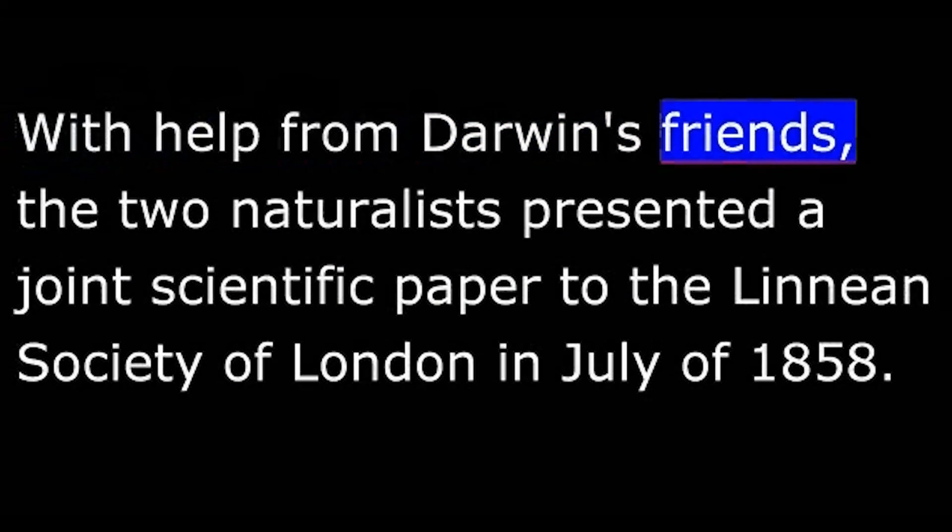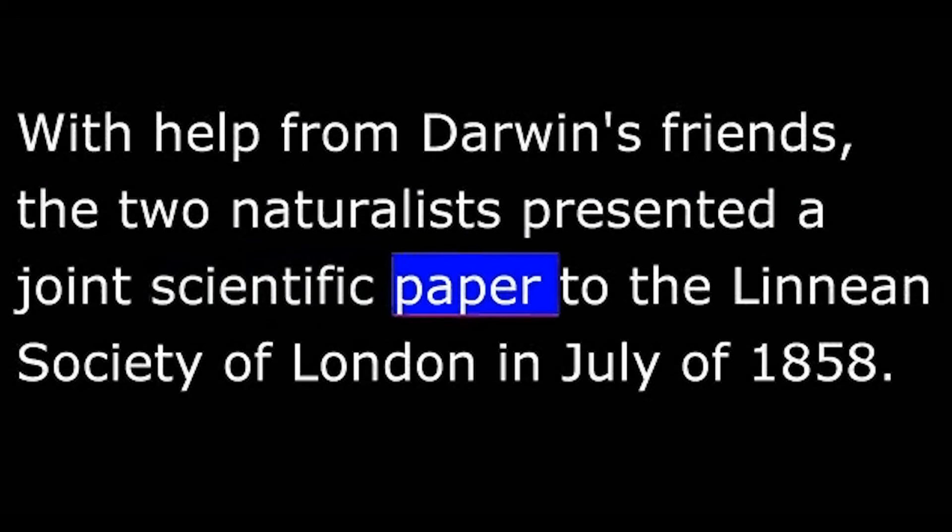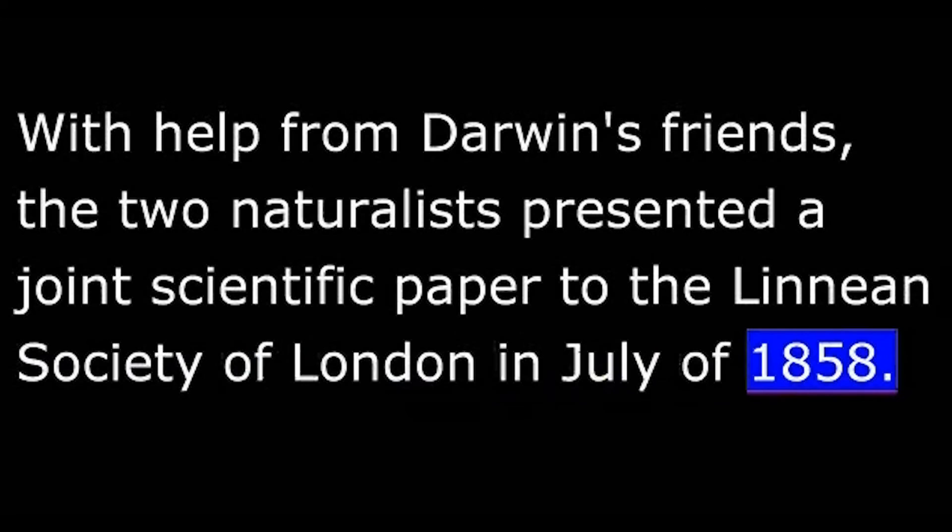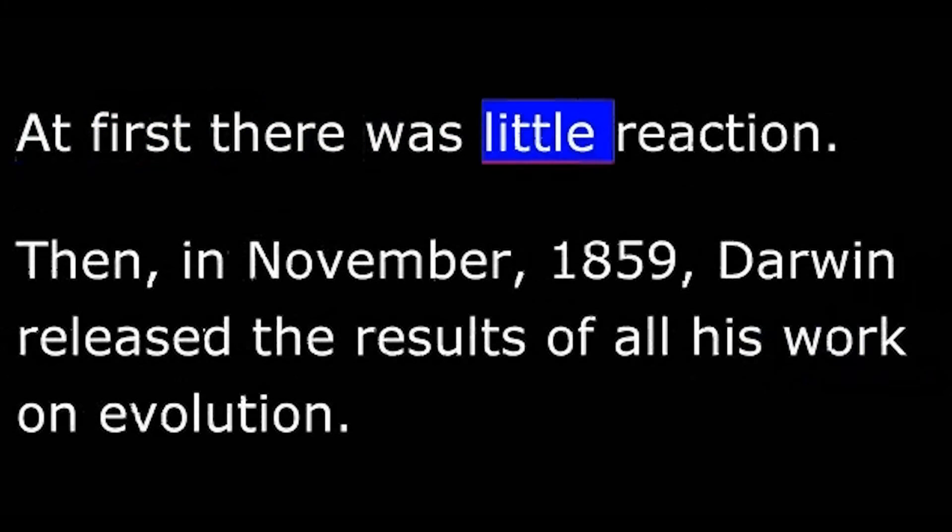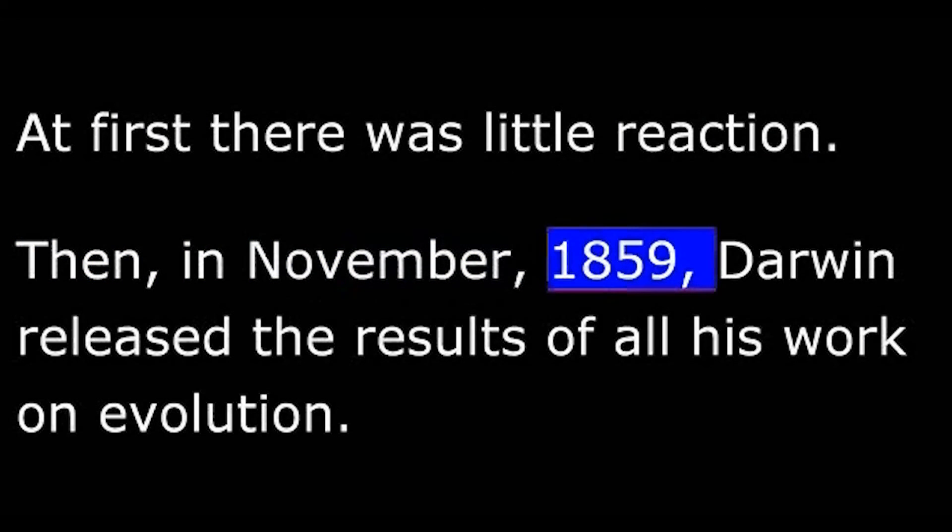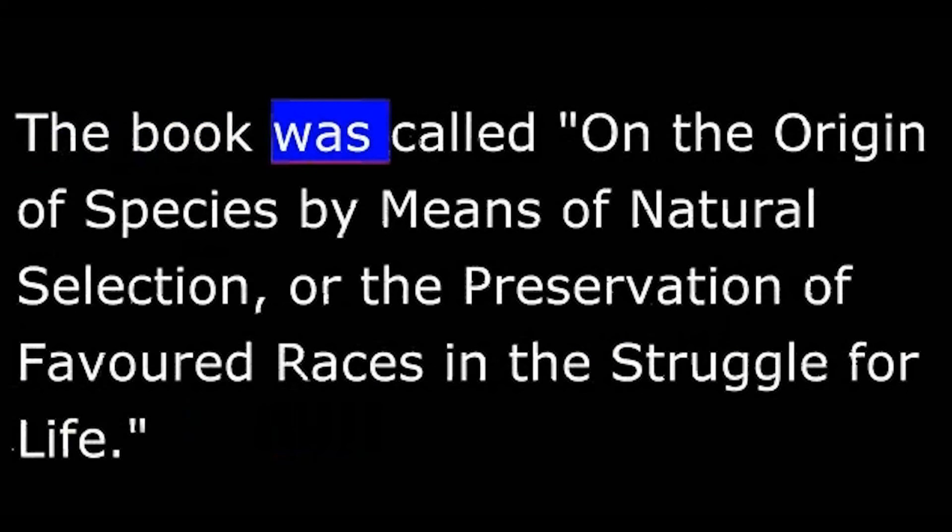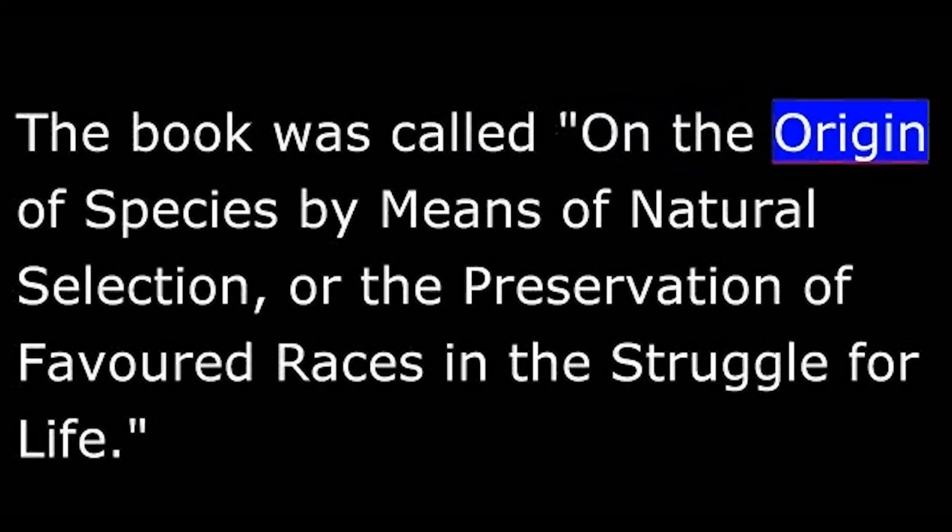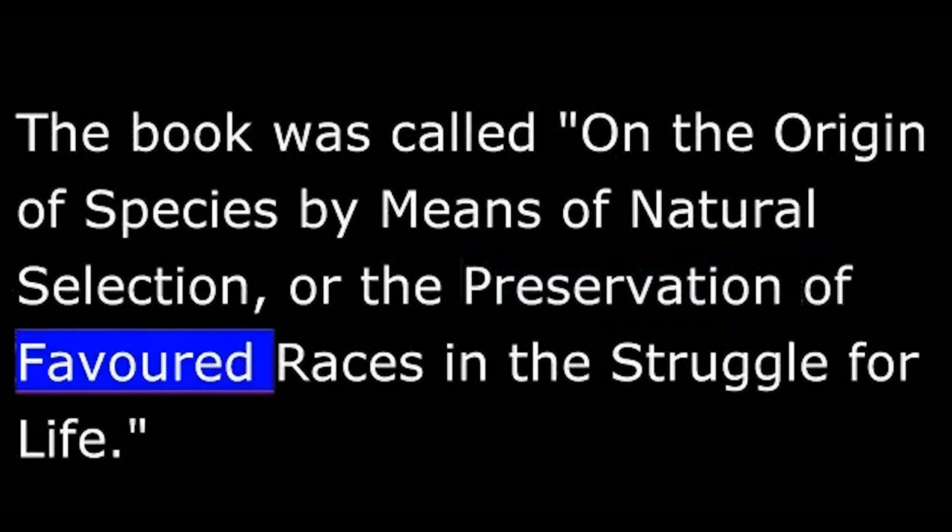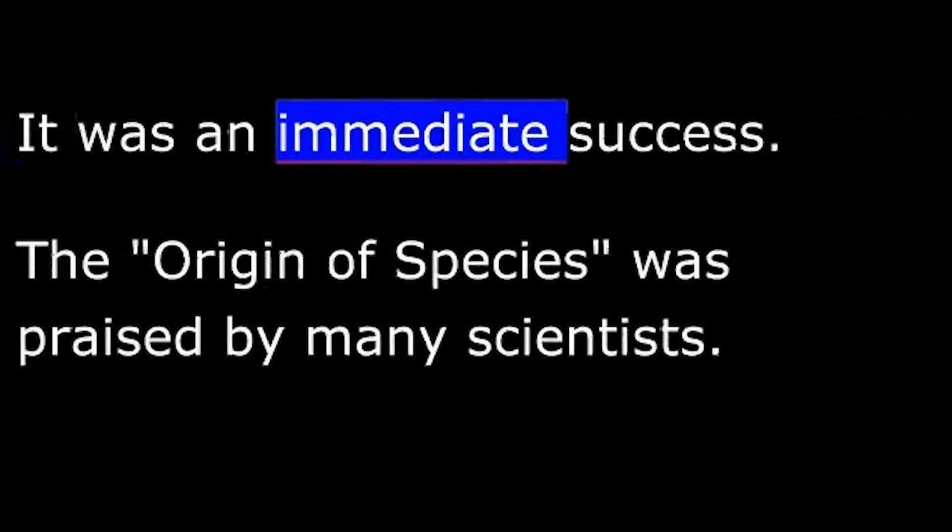With help from Darwin's friends, the two naturalists presented a joint scientific paper to the Linnean Society of London in July of 1858. At first, there was little reaction. Then in November 1859, Darwin released the results of all his work on evolution. The book was called On the Origin of Species by Means of Natural Selection, or the Preservation of Favored Races in the Struggle for Life. It was an immediate success.